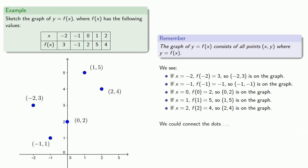We could connect the dots, but we have no evidence that there are any other ordered pairs x, y where y equals f of x. So at this point, we only know that the graph consists of these five discrete points. And again, if it's not written down, it didn't happen — so we should label this as the graph of y equals f of x.